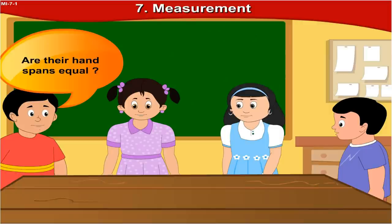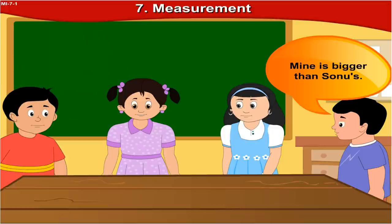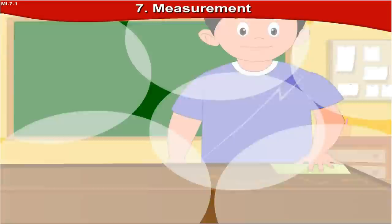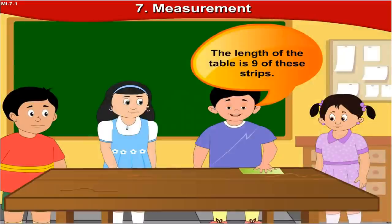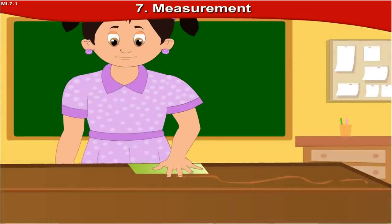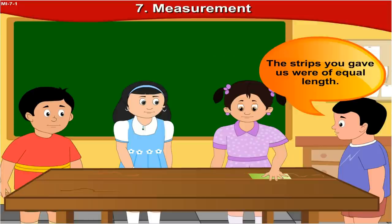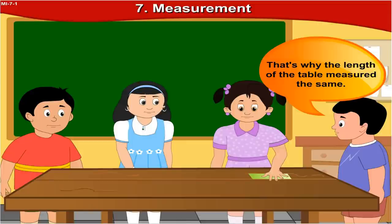Are their hand spans equal? Mine is bigger than Sonu's. That's what caused the problem. I'll give paper strips of equal length to both of you — use them to measure this length. The length of the table is 9 of these strips. When I measured it, it was 9 strips too. The strips you gave us were of equal length. That's why the length of the table measured the same.